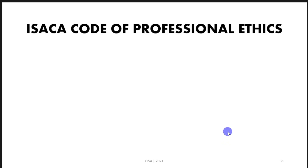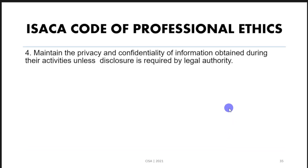The fourth point of the ISACA Code of Ethics is to maintain the privacy and confidentiality of information obtained during the audit activity, unless disclosure is required by legal authority. Do not use the data you gain access to during your audit mission for your own interest. Maintain privacy and confidentiality because you should be a highly trusted person.